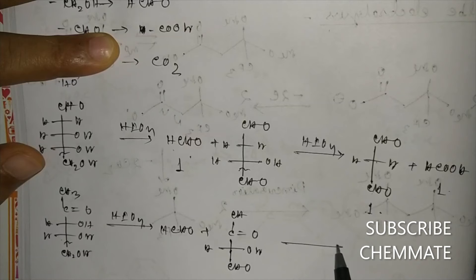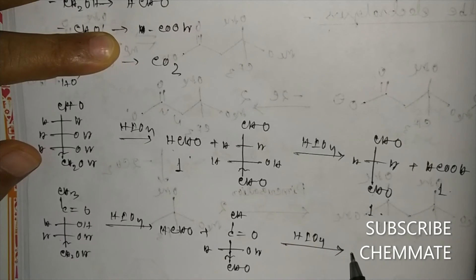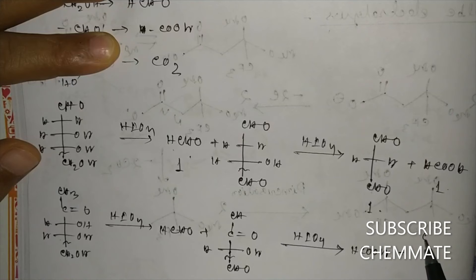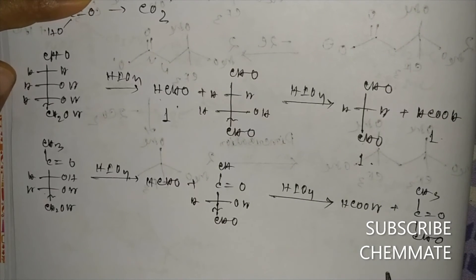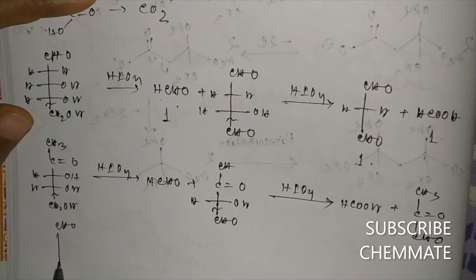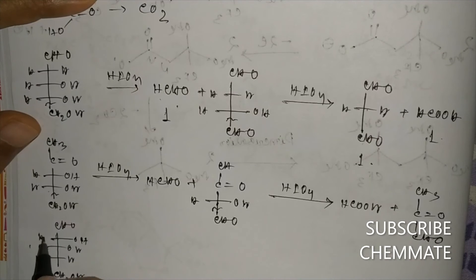This second molecule reacts with another equivalent of HIO4 to cleave the bond, converting to H-C=O and H-C=O, and this gives CHO-CH3-C=O-CHO, which does not satisfy our required condition.